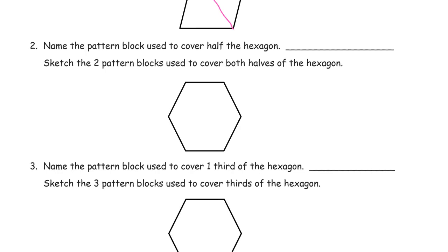And now, it says name the pattern block used to cover half of the hexagon. So what does it look like if you put them together like that? Those are the trapezoids.